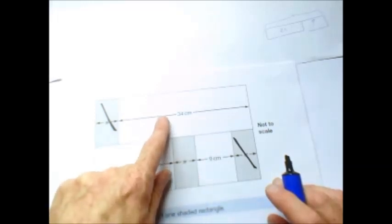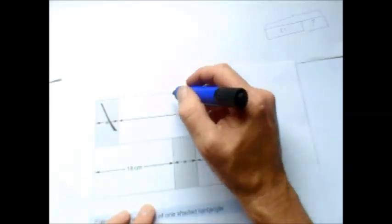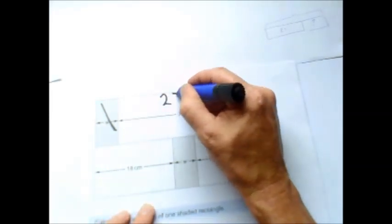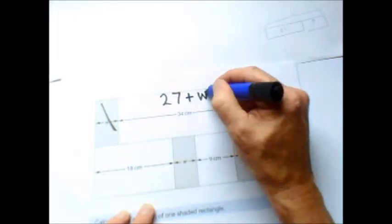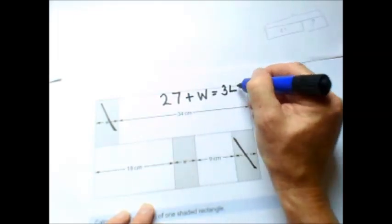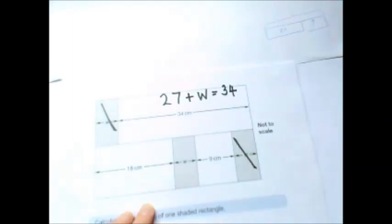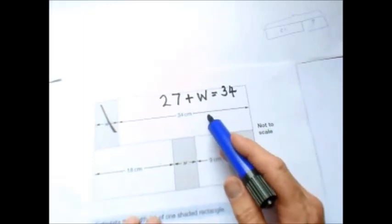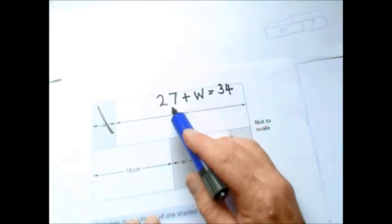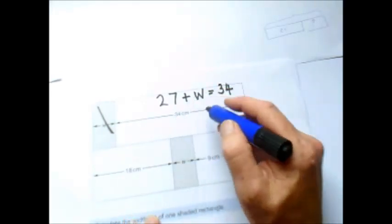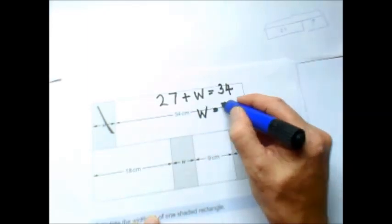So now we have a calculation of 27 plus W equals 34. Even though it doesn't specifically say on here that you're using bar model, it's using the same principle. So basically, you've got to realize, what do I add to 27 to make 34? So therefore, W equals 7. And it's now prudent to actually replace the W with 7 to see if it actually works.